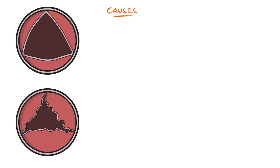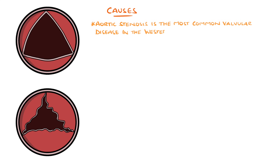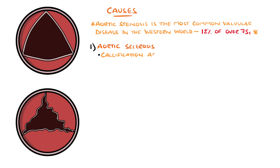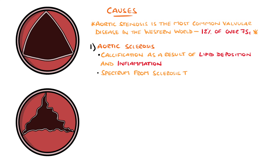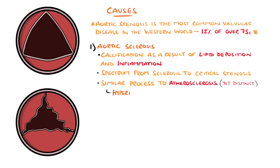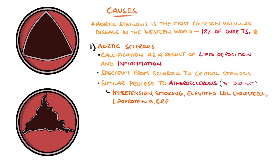Aortic stenosis is the most common valvular disease in the western world, thought to affect around 12% of people at the age of 75. The most common cause in the west is aortic sclerosis — meaning calcification — which occurs as a result of inflammation and lipid deposition in the valve, and over time eventually becomes stenosis. This is why calcific aortic valve disease is considered a spectrum. This process is similar to atherosclerosis and shares several of the same risk factors, including hypertension, smoking, elevated low-density lipoprotein cholesterol and lipoprotein(a), and elevated C-reactive protein.